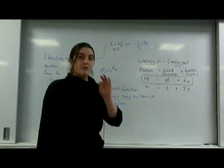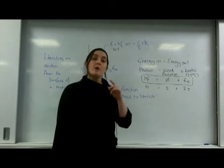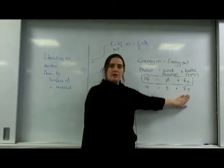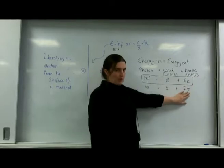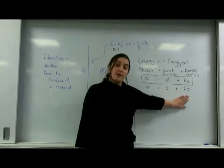If I had more photons, this means more electrons would be liberated, but they would all have the same amount of energy. So they would all have 7 joules of kinetic energy. It would just change how many are being liberated.